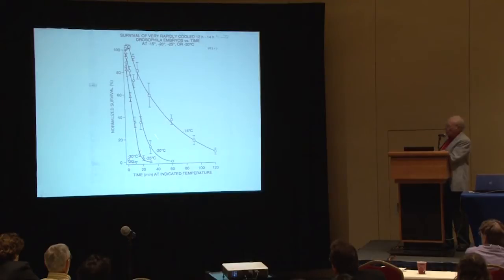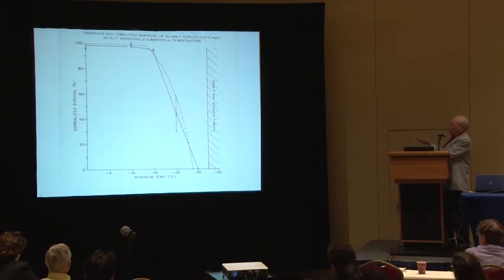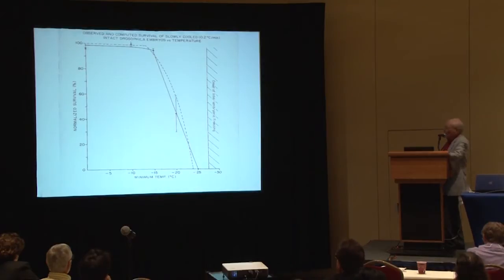From these curves we could calculate activation energies, and from the activation energies we could compute how much death there ought to be at different temperatures. The dashed line represents that calculation; the solid line and the symbols show what the measured survival was when cooled at two-tenths of a degree a minute. There's a good match between the theory and the experimental, which means you cannot succeed in cryopreserving Drosophila by slow freezing approaches. The alternative is to outrace the chilling injury by cooling at high rates, but if you try to cool at high rates you kill them by intracellular freezing, and the only way to avoid that is to go a vitrification route.